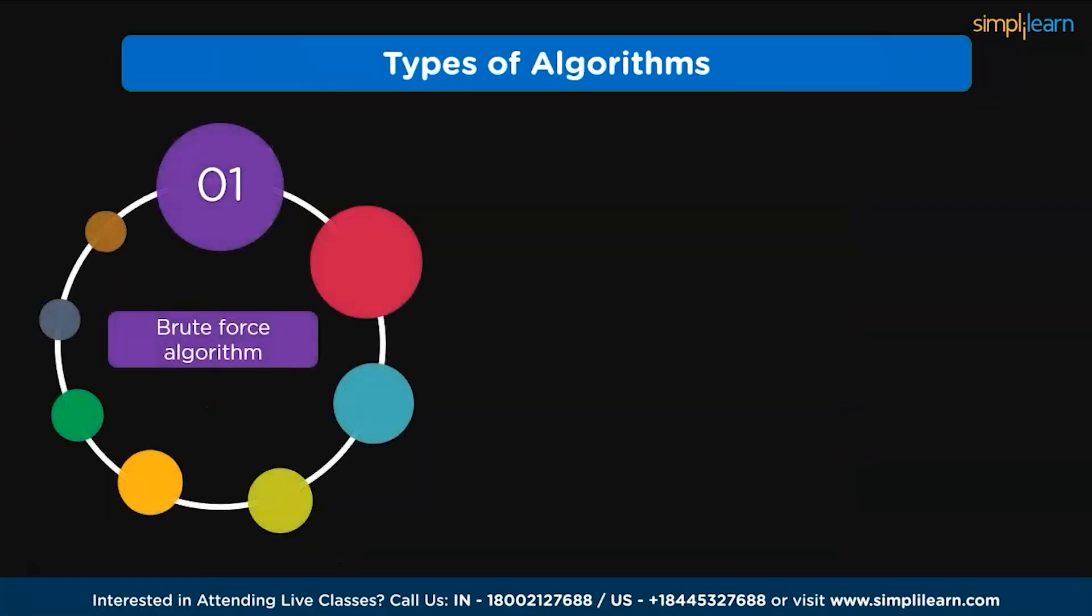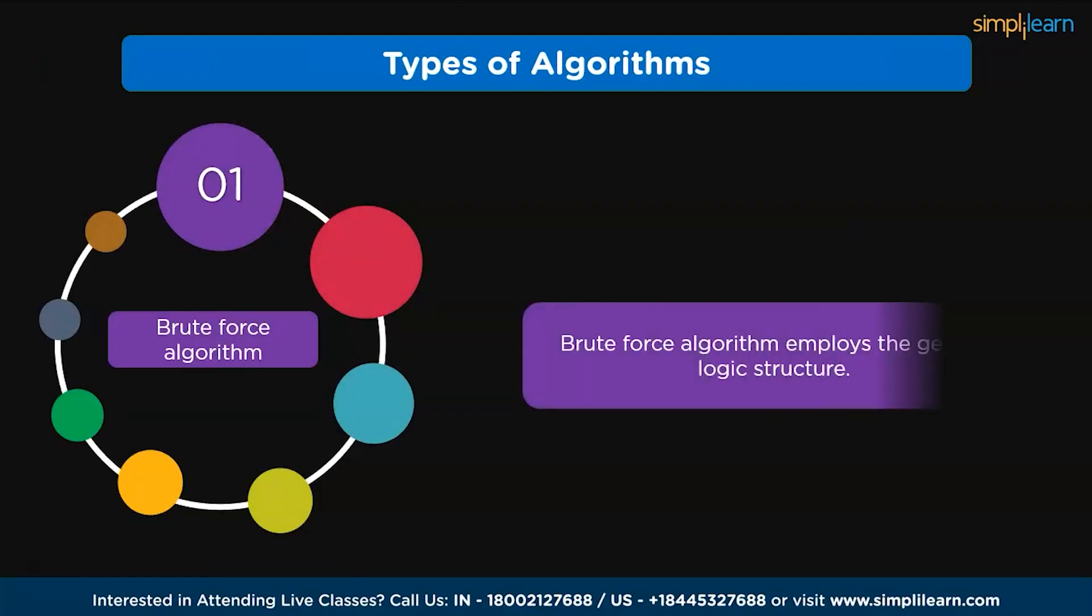Then, there are different types of algorithms. So, let's understand each one by one. First, we have brute force algorithm. To design an algorithm, this algorithm employs the general logic structure. It is also known as an exhaustive search algorithm because it exhausts all possible solutions to a problem and is the simplest approach to the problem.